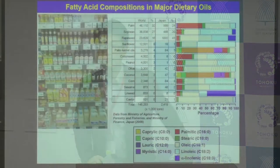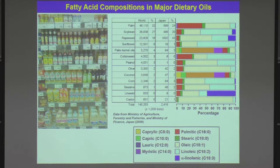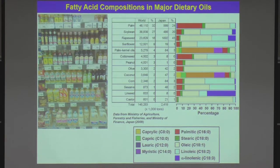In some cases, those cross-talks cause allergic or inflammatory diseases. One example is dietary oils. As you know, we have a lot of dietary oils in the supermarket — they look the same, but the content is quite different. The difference is determined by the fatty acid compositions, as shown in this graph of fatty acid compositions in plant-based dietary oils available in the supermarket.